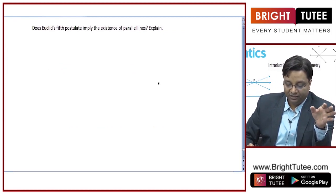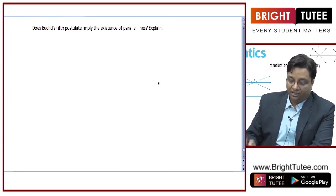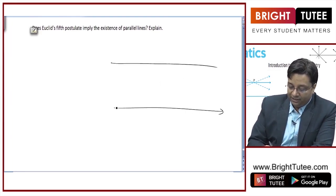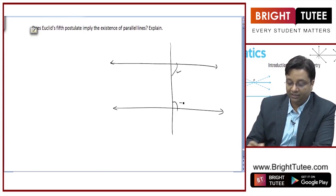So yes, we have discussed it earlier also that Euclid's fifth postulate implies existence of parallel lines because Euclid's fifth postulate suggests that when the sum of these co-interior angles or when the sum of these angles is lesser than 180, they will meet on that side.